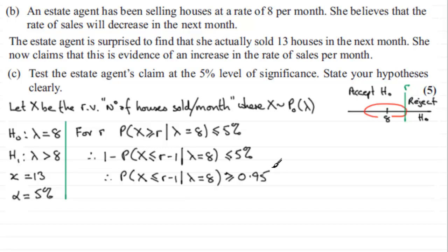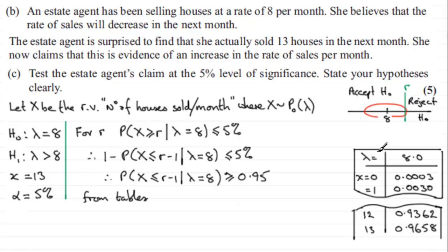Now we're going to need our tables. So from tables, where the mean lambda equals 8, look down your observed values here and you're looking for a value that, the first value that just beats 0.95, that just exceeds it. Well if we come down through here, you'll see at 12 it's 0.9362, well that doesn't exceed 0.95, but the next value is 13. 13 is the first value that exceeds 0.95 and it's this value that we're looking at. So from tables, R minus 1 must be equal to 13, which means that therefore R must be equal to 14. So the critical value here is 14.